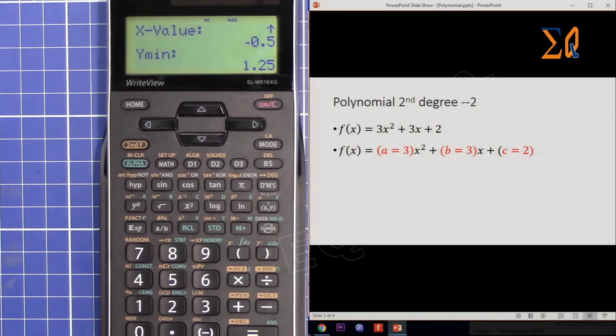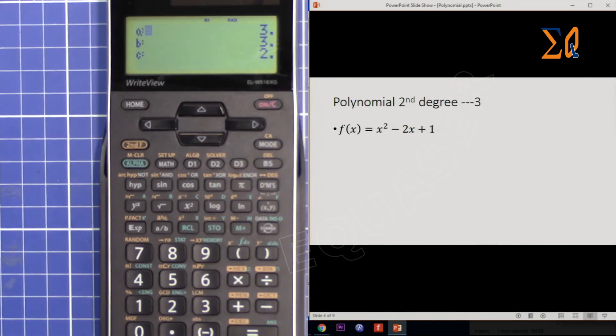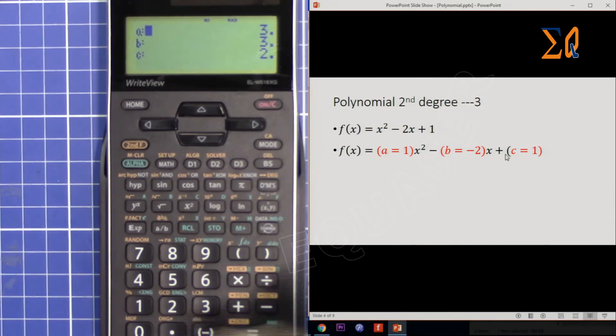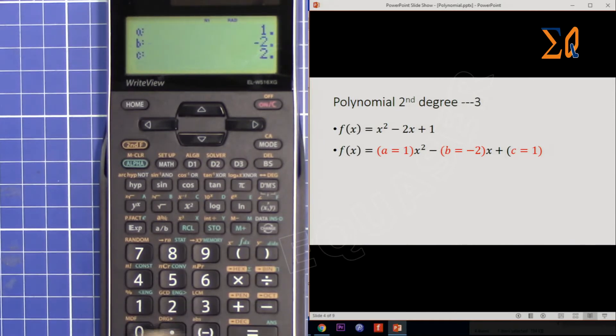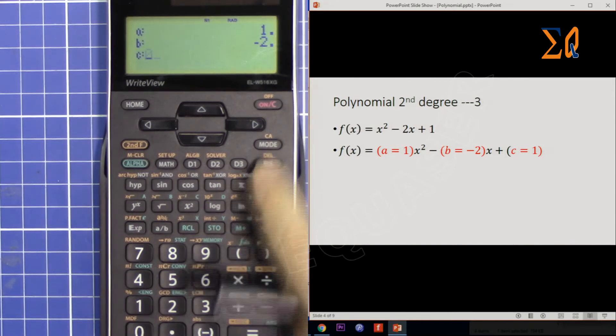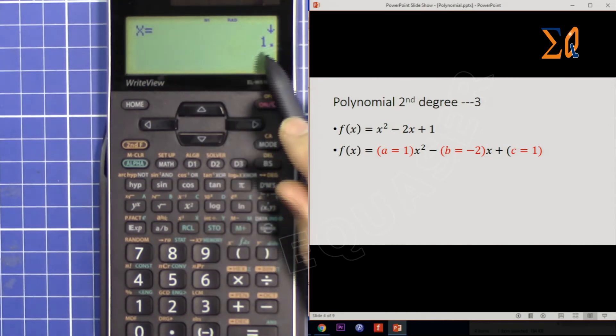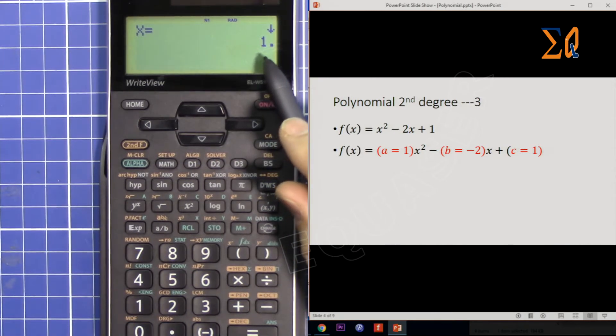Let's go for this one: x² - 2x + 1. So we have 1, then -2, and 1. One, minus 2, and 1. We got x = 1, so we have two x = 1 (a repeated root).